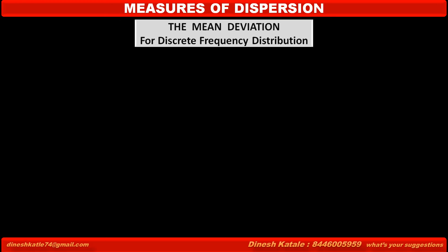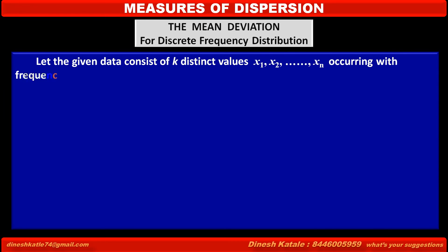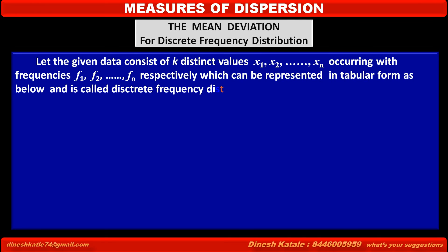Now, we have to learn the mean deviation for discrete frequency distribution. Let the given data consist of k distinct values x1, x2, ... xn occurring with frequencies f1, f2, ... fn respectively, which can be represented in tabular form as below, and is called discrete frequency distribution.